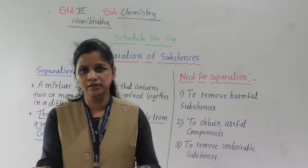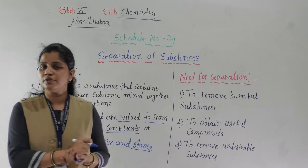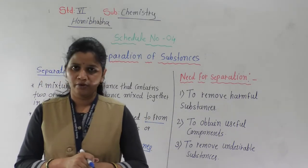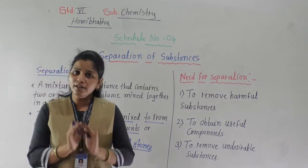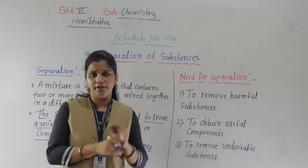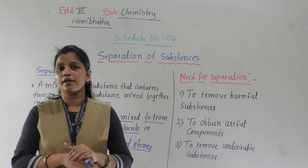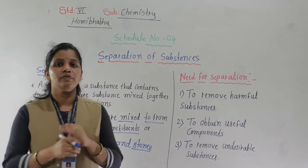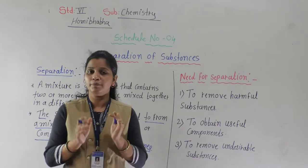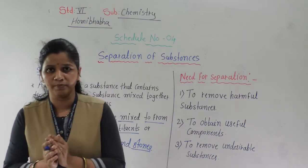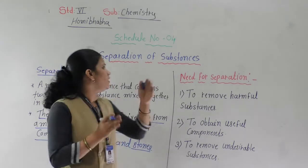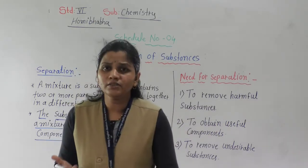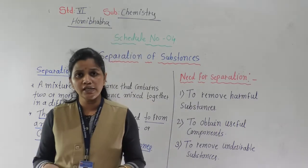Another example is salt and water. These two substances — one is salt and another one is water — are also things we have to separate. There are some different methods for this, and we will be learning those methods in this chapter. But before we start the methods of separation, what is the need for separation? Why are we separating these things?